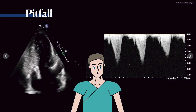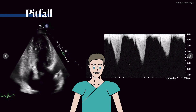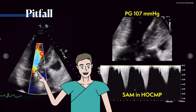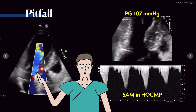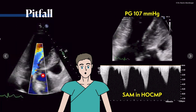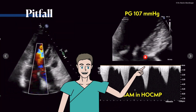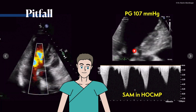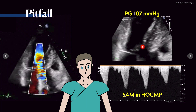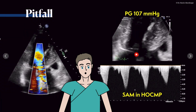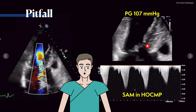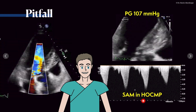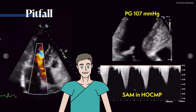This is distinctly different compared to the aortic valve and aortic stenosis. This is a real pitfall because you can see there is flow turbulence, denoting a problem with the outflow. The aortic valve itself appears normal. The problem is really this systolic anterior motion of the anterior mitral valve leaflet towards the interventricular septum, which creates this gradient. This is SAM in hypertrophic obstructive cardiomyopathy.